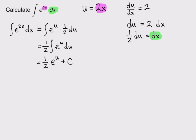Alright, we're almost done. But we started with x's, so we need to end with x's. So I'm going to replace everything. I'm going to unsubstitute. So that's 1/2 e, and u is 2x, plus a constant, which stays there. And this, right here, is my general antiderivative.